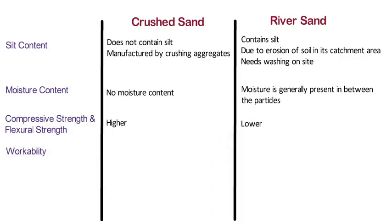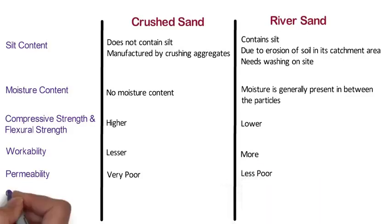Workability: The workability of concrete manufactured with crushed sand is lesser than that manufactured with natural sand, whereas the workability of concrete manufactured with river sand is more than that manufactured with crushed sand. Permeability: When crushed sand is used in concrete, the permeability of concrete is very poor as compared to river sand. But when river sand is used, the permeability of concrete is less poor as compared to crushed sand.